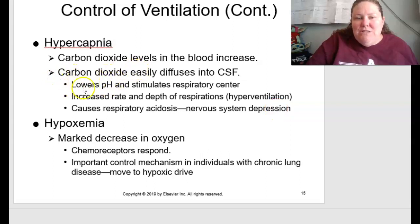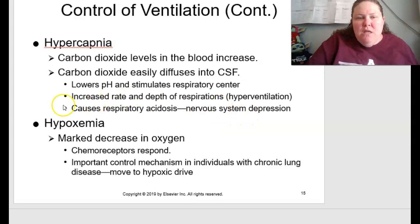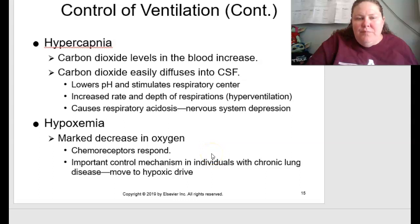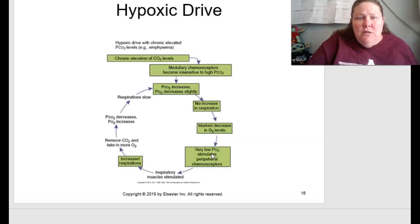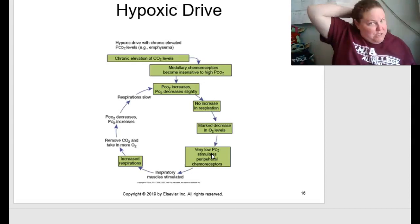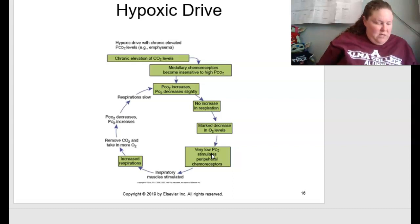Respiratory acidosis results from lower pH — an acidic state — which can cause nervous system depression. Hypoxemia is a marked decrease in oxygen where the chemoreceptors respond. There's an important control mechanism in individuals with chronic lung disease that moves them into a hypoxic drive. Hypoxemia is dangerous because you need oxygen to live.